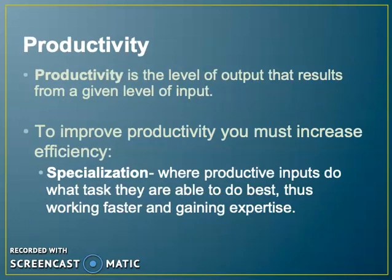Productivity is the output level. To improve your productivity, you must increase efficiency and be able to produce more for your company. Specialization is where your company specializes in certain things. For example, tire places specialize in changing tires, though some also do brakes and oil changes. MyPillow specializes in producing pillows, and china companies specialize in producing dishes.